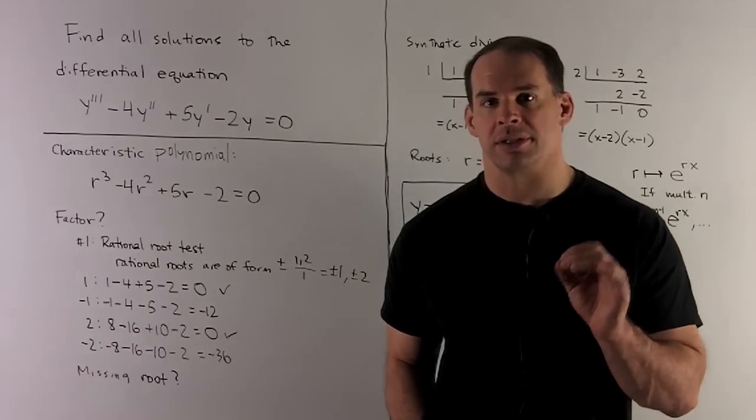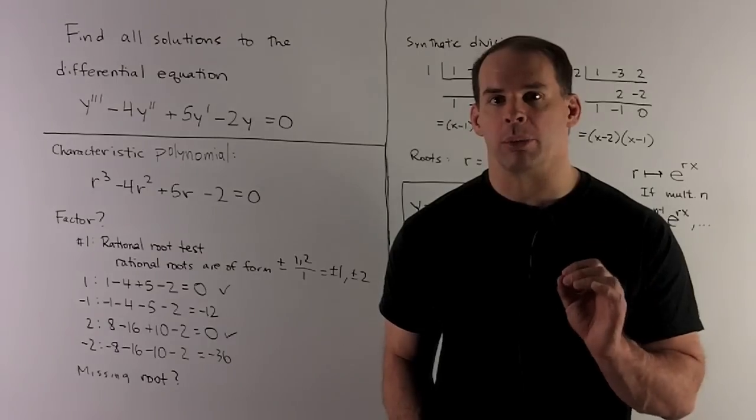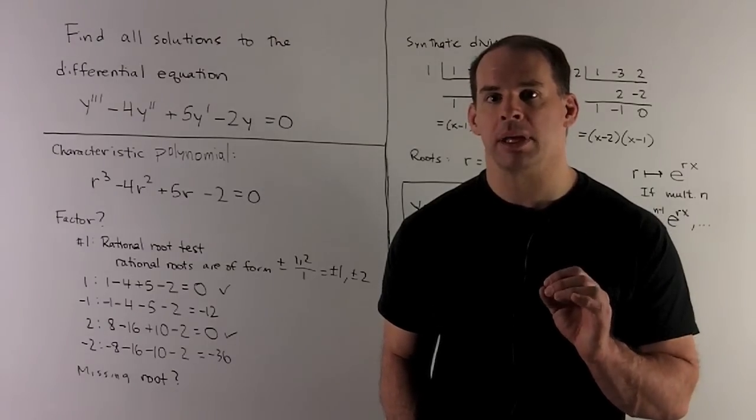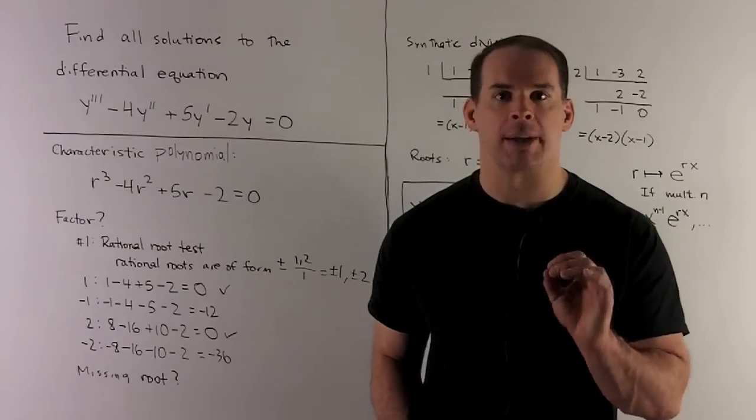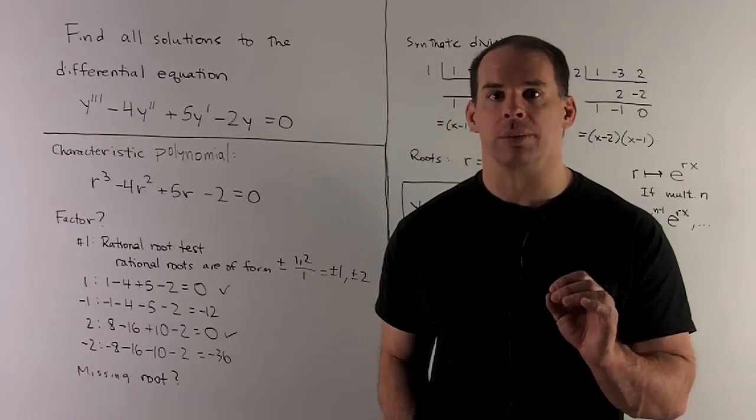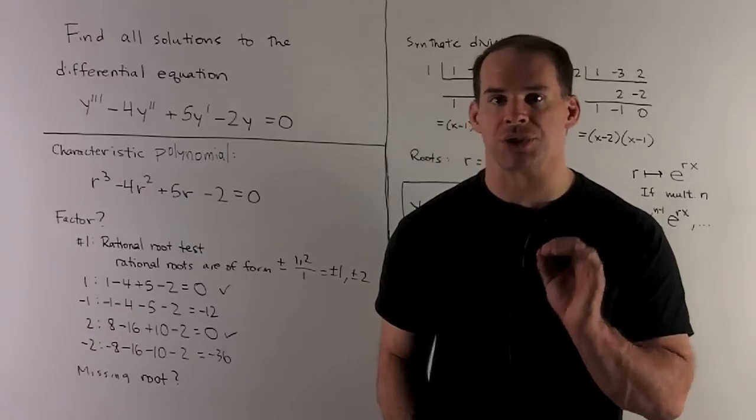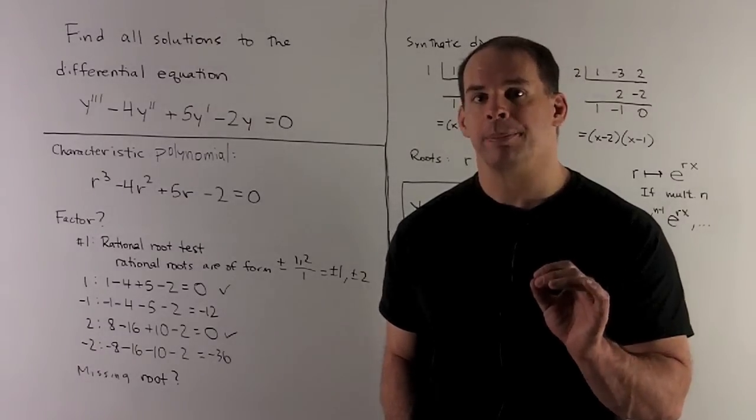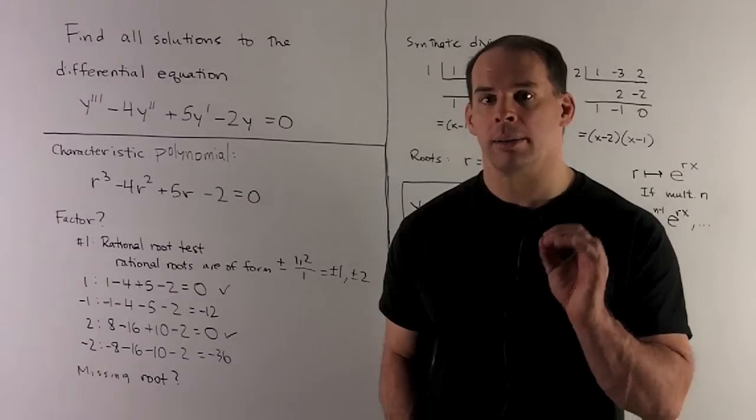Find all solutions to the differential equation y triple prime minus 4y double prime plus 5y prime minus 2y equals zero. First step, the characteristic polynomial. Here, the primes become exponents, the y term becomes our constant term. We get r cubed minus 4r squared plus 5r minus 2.